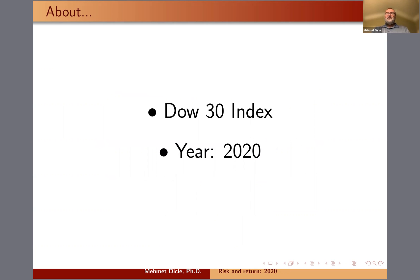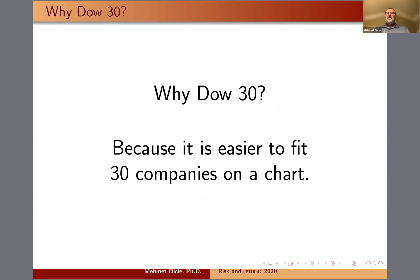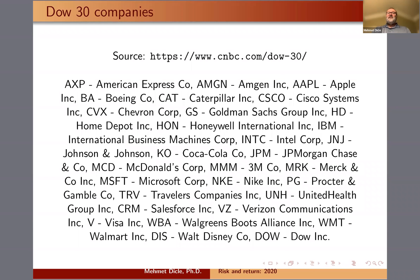I used the Dow Jones 30 index this time, and the year is 2020 — an interesting year. Why Dow 30? Because it is much easier to fit 30 companies on a chart than the usual S&P 500, so 30 is much easier to see and read the labels. The source of which companies are included in the Dow 30 is the CMDC, and that's the source URL.